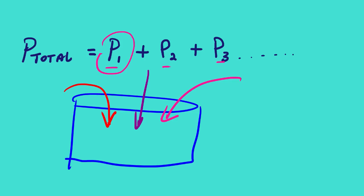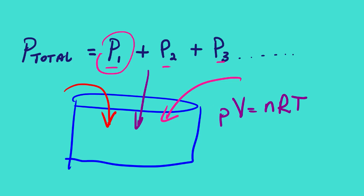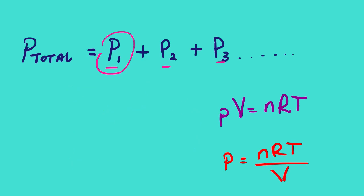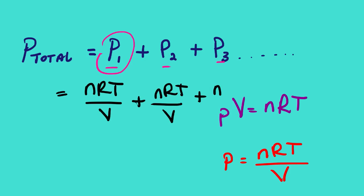Bearing in mind the ideal gas law, if we solve for P by dividing both sides by V, we get P = nRT/V. We can further expand this so that P_total = (n₁RT/V) + (n₂RT/V) + (n₃RT/V) + ...